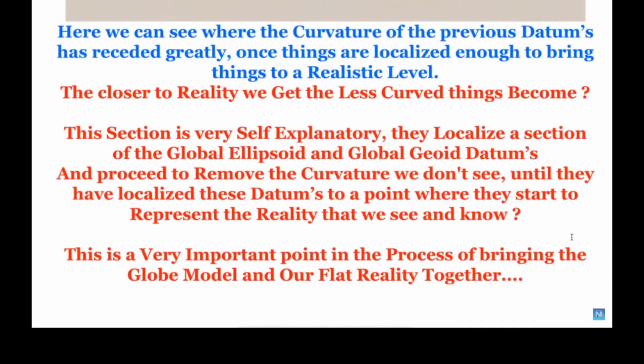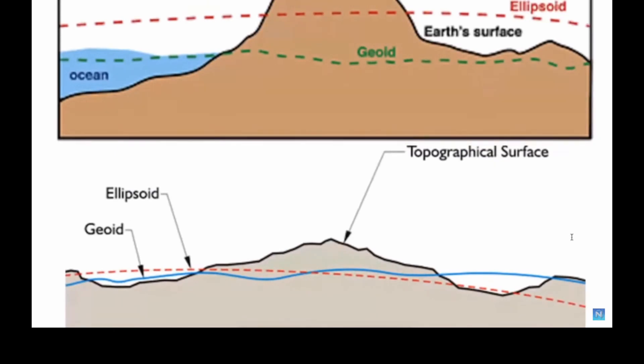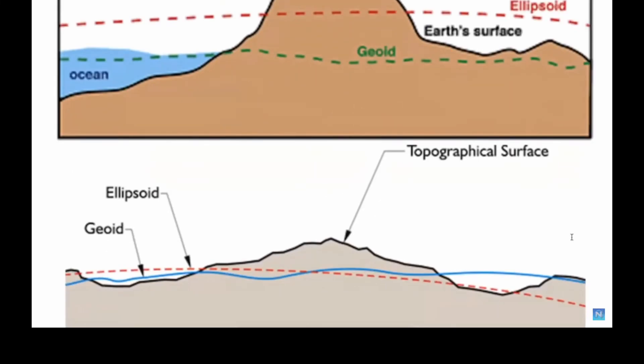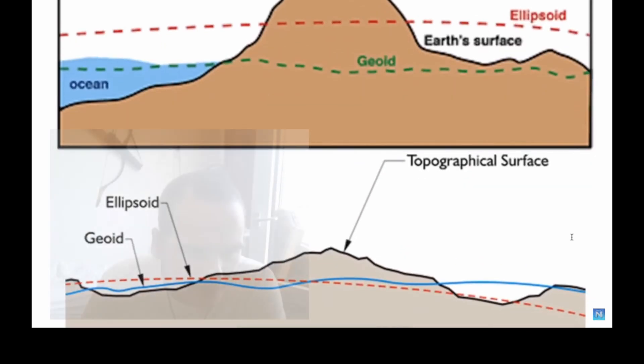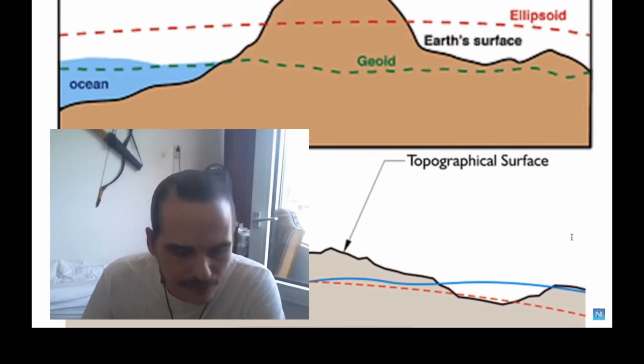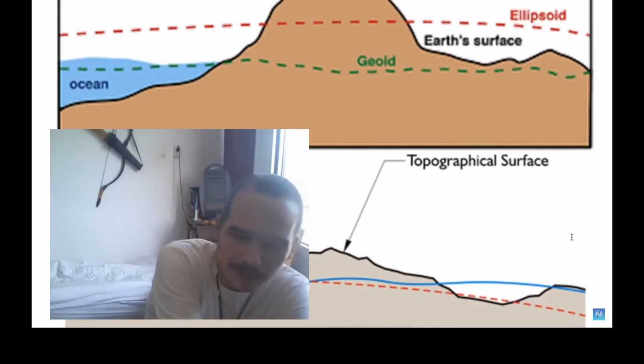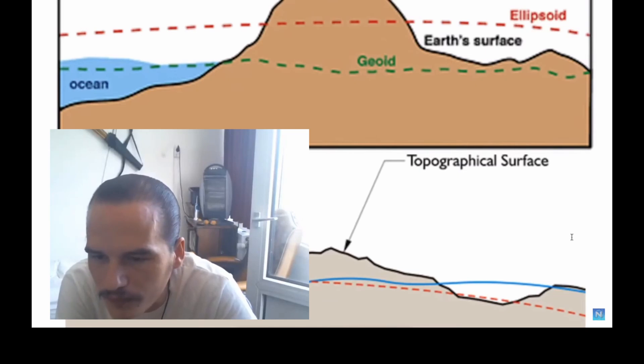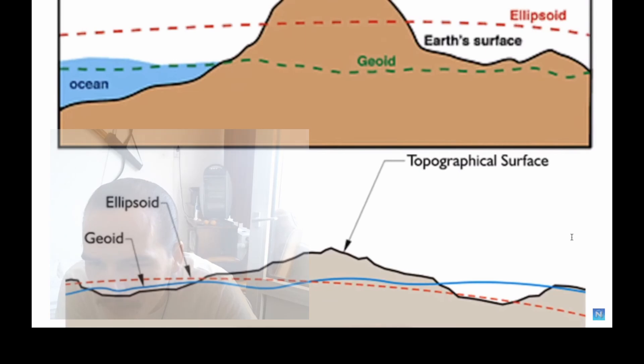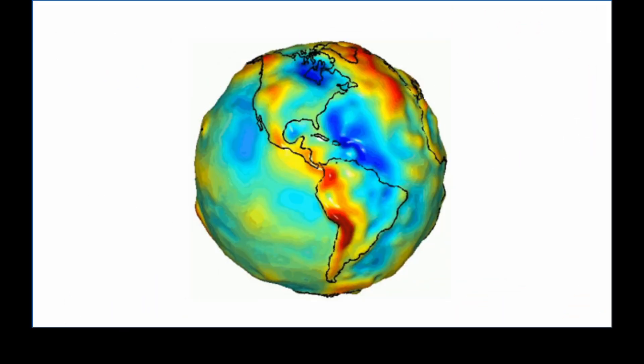They have localized these data to a point where they start to represent the reality that we see and know. This is a very important point in the process of bringing the globe model and our flat reality together. When they start localizing everything, they can start saying we don't really see as much curvature anymore. They can start hand-waving away the curvature that they don't see. It's not hand-waving, it's down-playing it. Well I mean, if they really put in, went looking for it, they wouldn't find it. So they have to hand-wave it or down-play it. The down-playing is basically making it so small that it eludes the senses. That's basically their final strategy. It's not a strategy Arwen, it's reality.